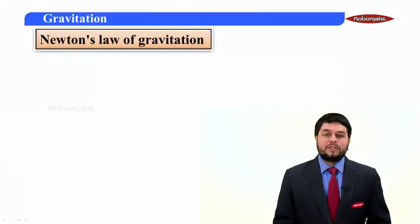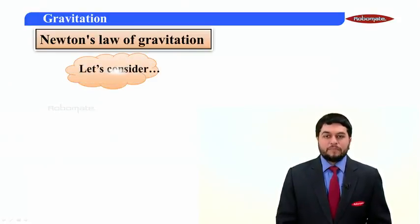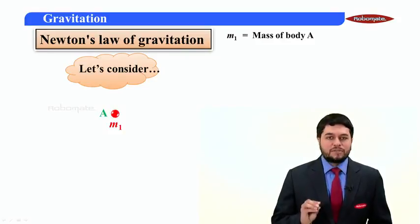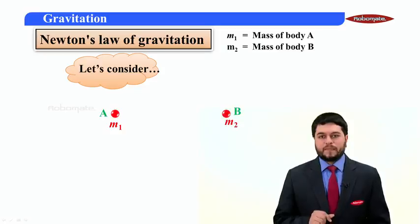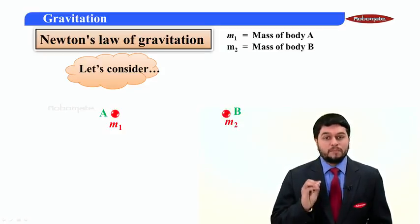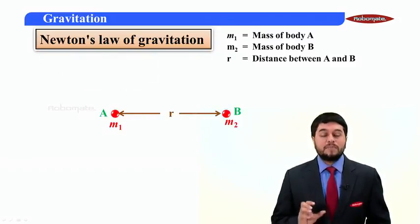Let's start with Newton's law of gravitation. Let's understand the meaning of it and then define the law. For that, let's consider M1 as a mass of body A, and let's consider another mass M2 of mass of body B. Let's say these two masses are separated by some distance R.